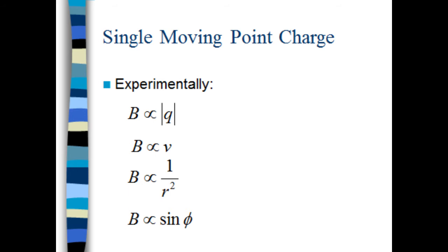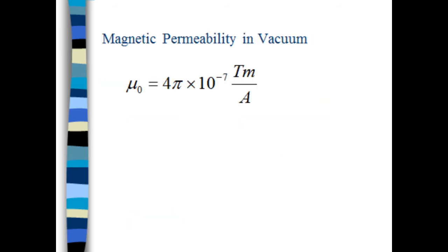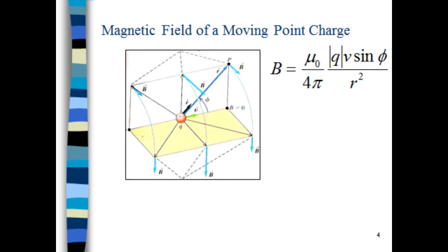Experimentally, it can be determined that the magnetic field at point P is proportional to the absolute value of the charge Q, proportional to its speed, inversely proportional to the distance squared between the two points, and proportional to sine of phi. Putting all of these together, we get our proportionality relationship. To make it usable, we need the proportionality constant, also determined experimentally, which is mu sub-zero over 4 pi. Mu sub-zero is the magnetic permeability in a vacuum, with value 4π × 10⁻⁷ T·m/A, giving the constant a value of 1 × 10⁻⁷ T·m/A.